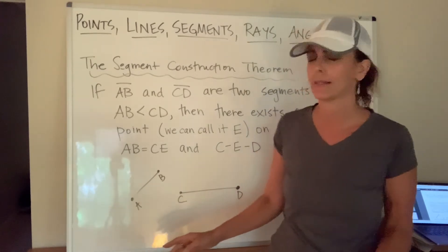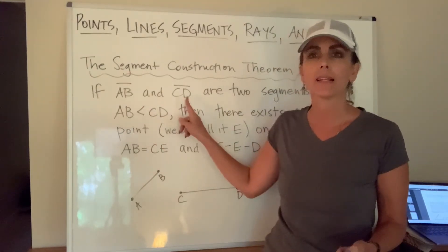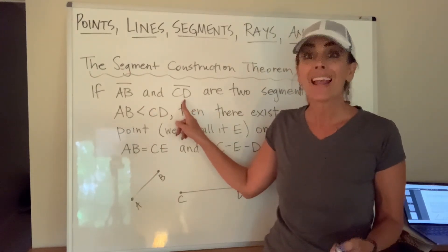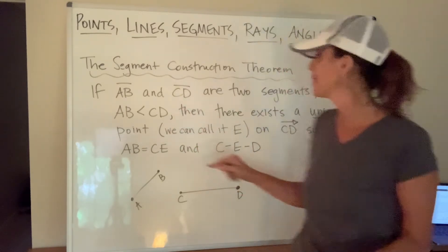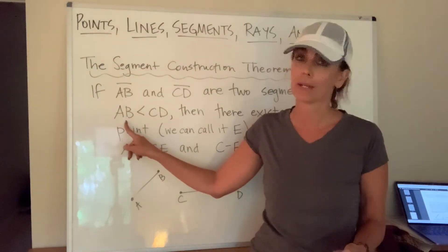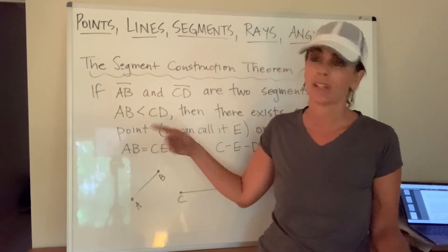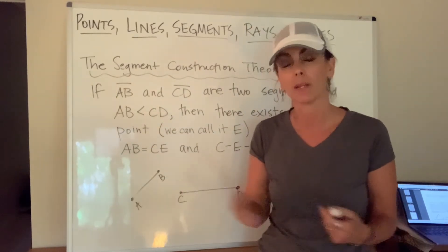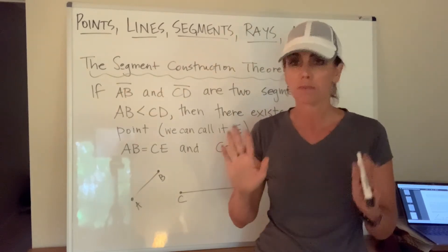Okay, this theorem states that if I have two segments, AB and CD. Okay, and these two segments have lengths that are not equal. Actually, the distance between A and B is less than the distance between C, D. So we know that C, D is a little bit longer than A, B. I'm not going to make any rude comments there, but just saying.